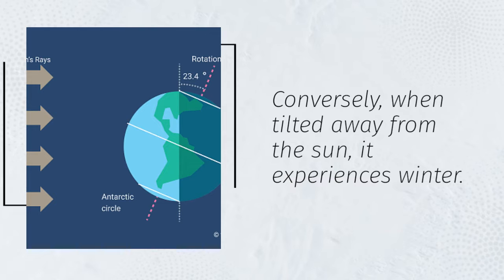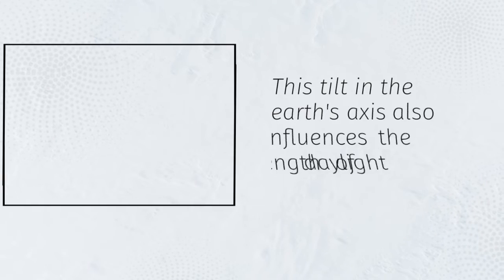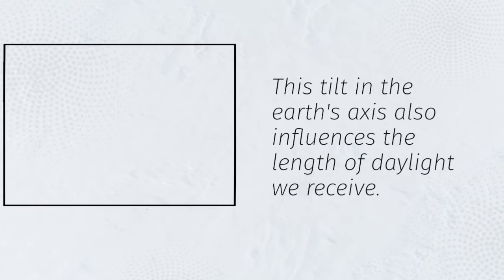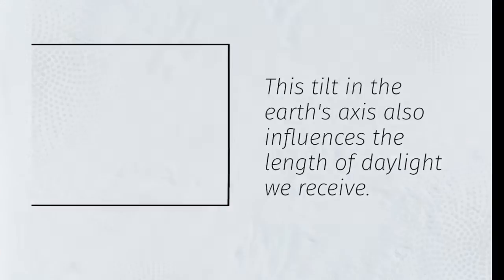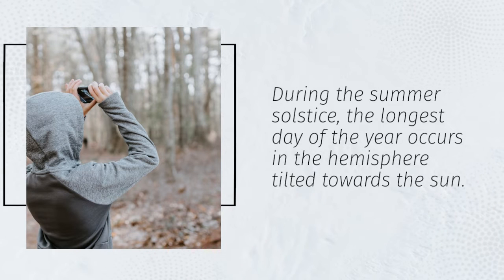Conversely, when tilted away from the Sun, it experiences winter. This tilt in the Earth's axis also influences the length of daylight we receive. During the summer solstice, the longest day of the year occurs in the hemisphere tilted towards the Sun.